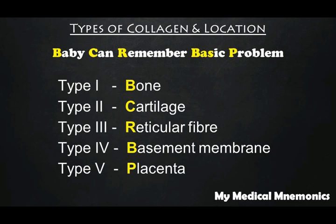'Baby' will help you remember that Type 1 collagen is predominant in bone. 'Can' helps you remember that Type 2 collagen is predominant in cartilage. 'Remember' stands for reticular fibers — Type 3 collagen is predominant in reticular fibers. 'Basic' from 'base' helps you remember basement membrane — Type 4 collagen is predominant in the basement membrane. From 'Problem' you can remember placenta — Type 5 collagen is predominant in the placenta.